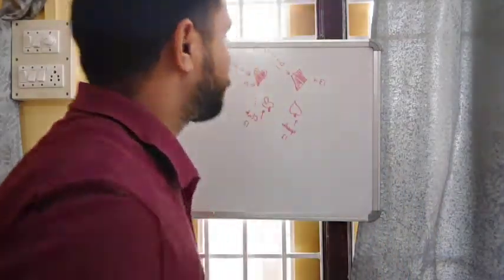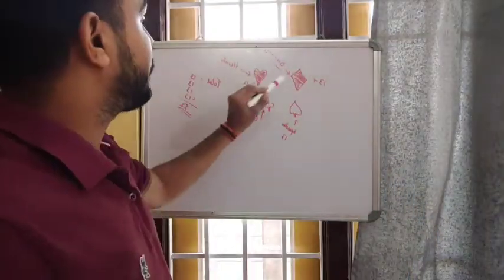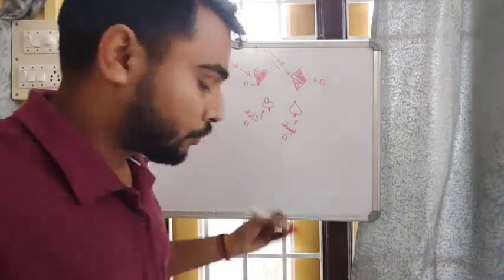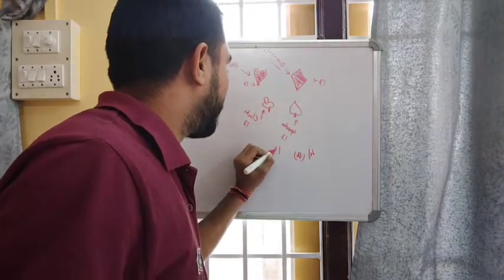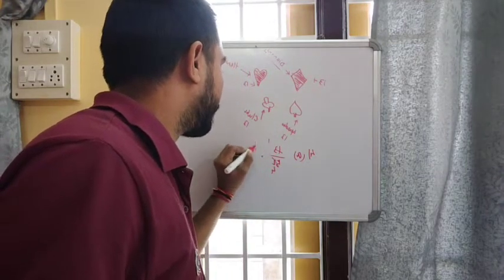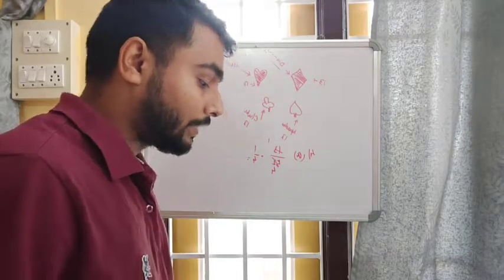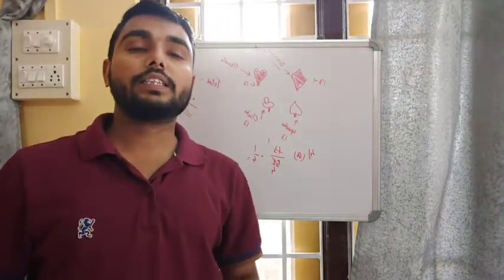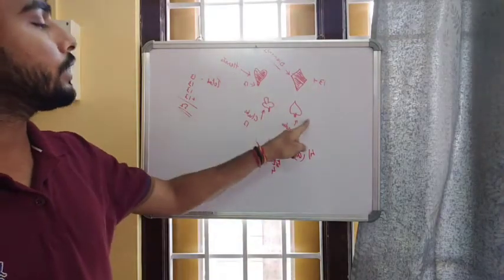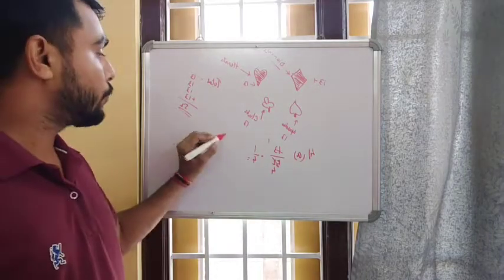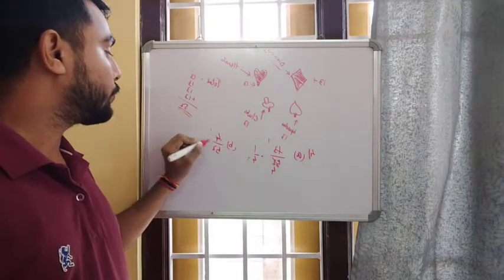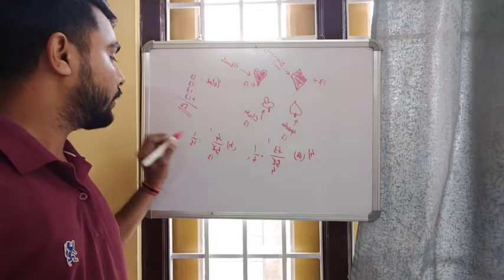For number A, a diamond is chosen. There are 13 diamond cards out of 52 total, so probability is 13 by 52, which reduces to one by four. For number B, a king is chosen. There is one king in each of the four suits, so four kings total out of 52 cards — probability is four by 52, which reduces to one by thirteen.